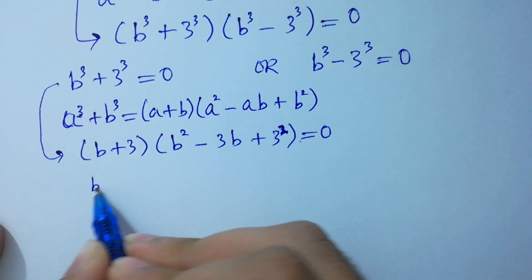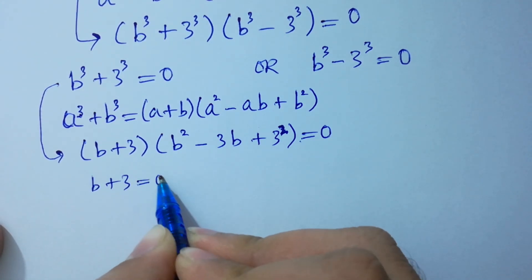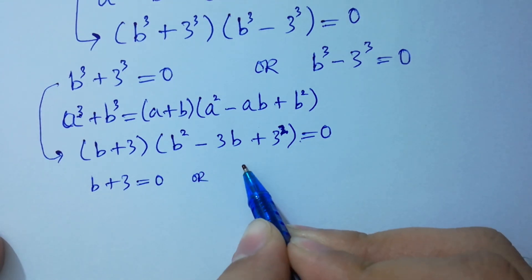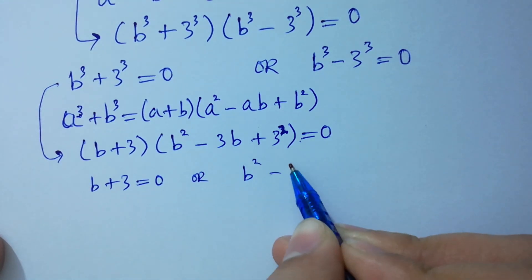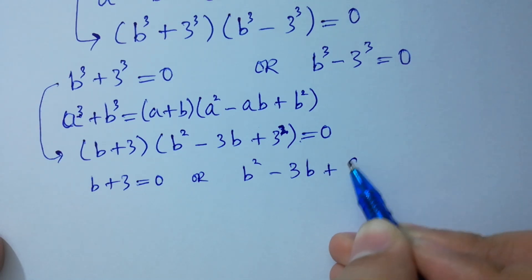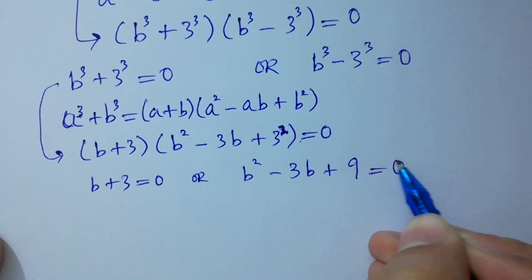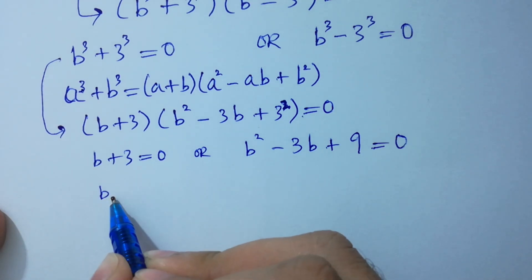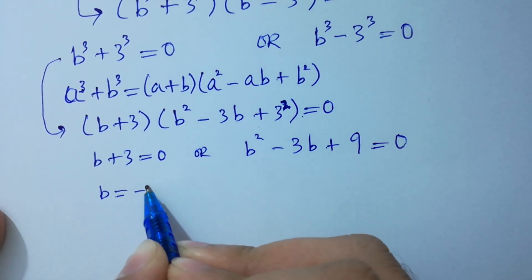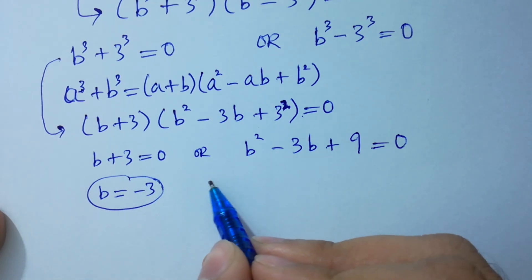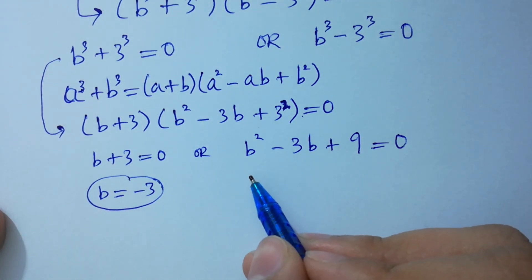...giving us B plus 3 equal to 0, or B squared minus 3B plus 9 equal to 0. Here we have the real solution B equals minus 3, and the second part is a quadratic equation.